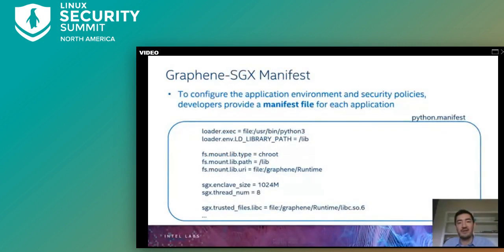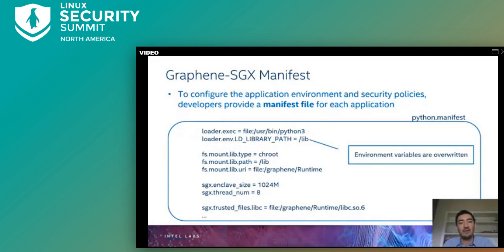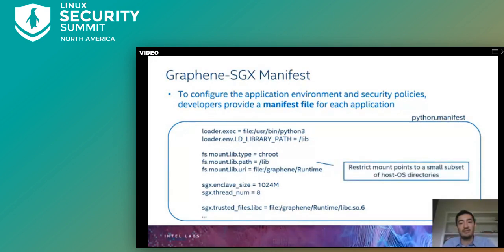As typical in security-critical environments, the application running inside Graphene in an SGX enclave must be accompanied by a security manifest. It is this security manifest — not the application binary — that is given to Graphene as input. This manifest is a plain text file in a simple format. For example: it must specify the actual executable to load, such as the Python 3 executable; it may overwrite required environment variables; it should specify a subset of host OS directories to be mounted, possibly under a different name — for instance, glibc libraries are silently replaced with Graphene-patched glibc libraries.